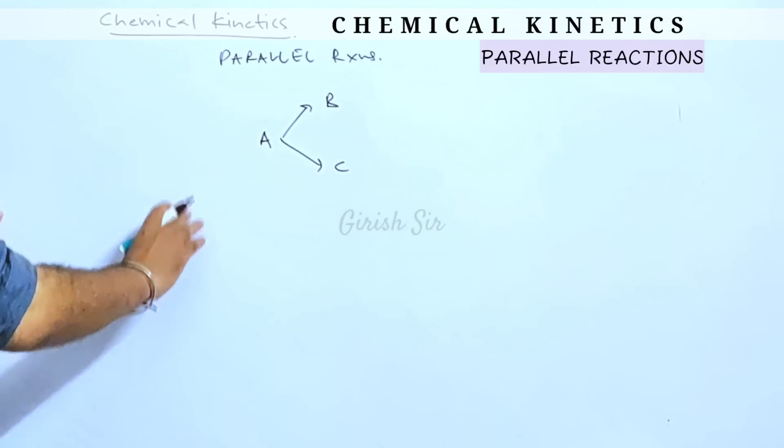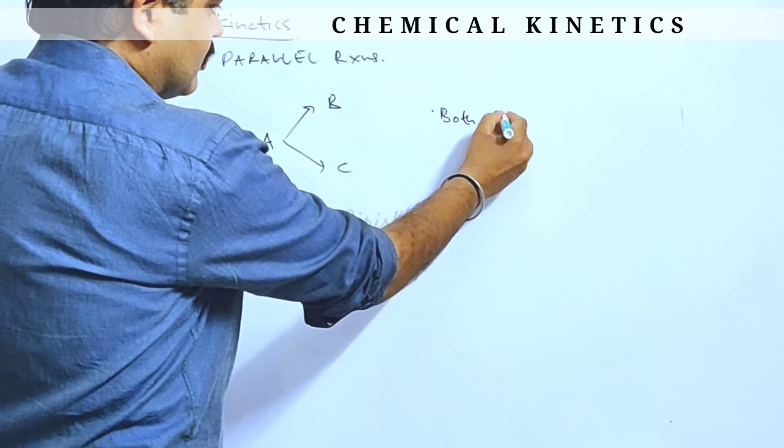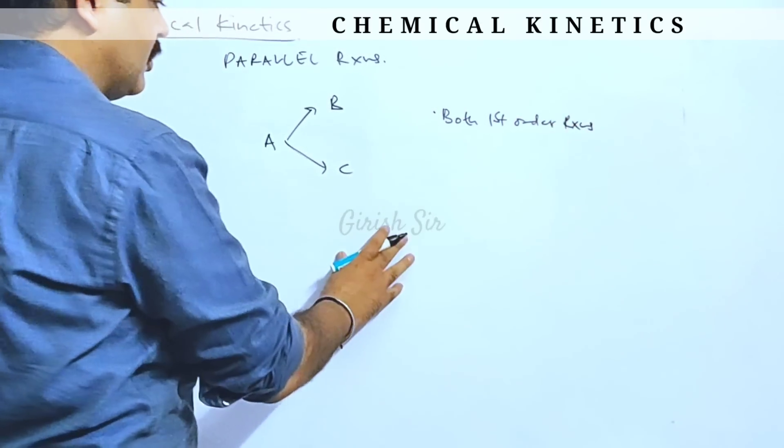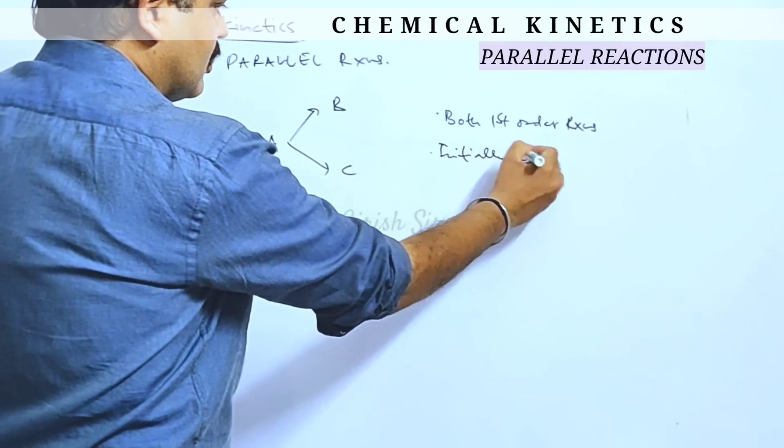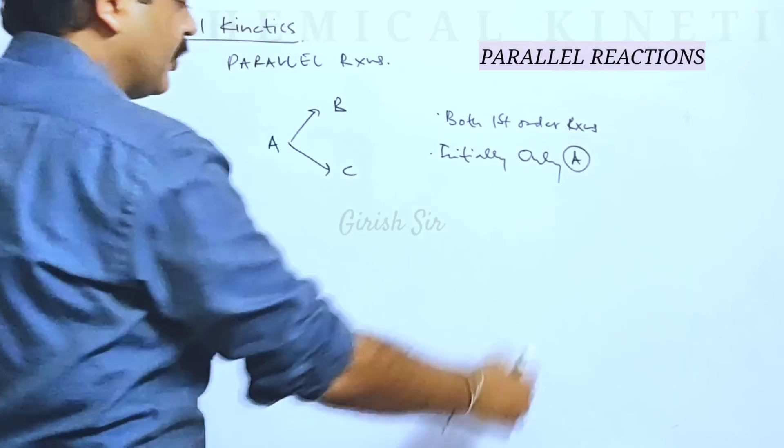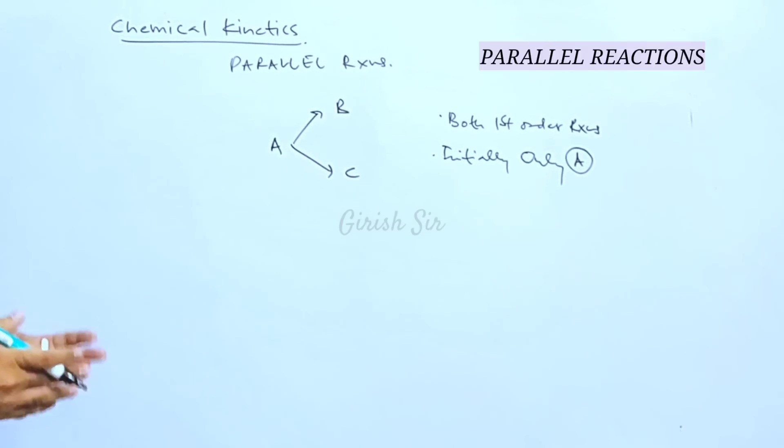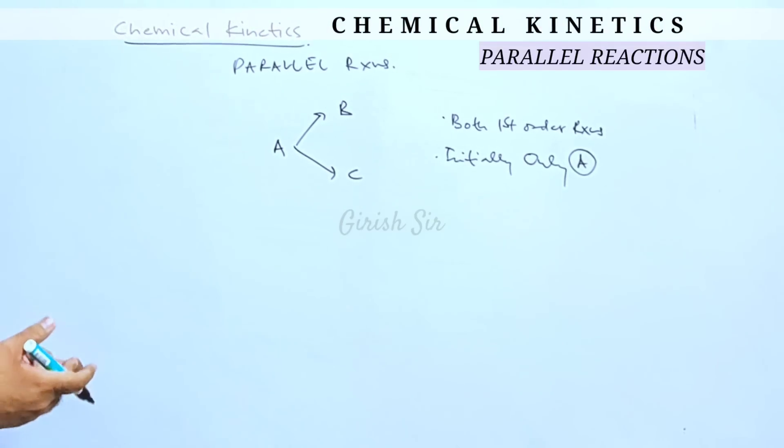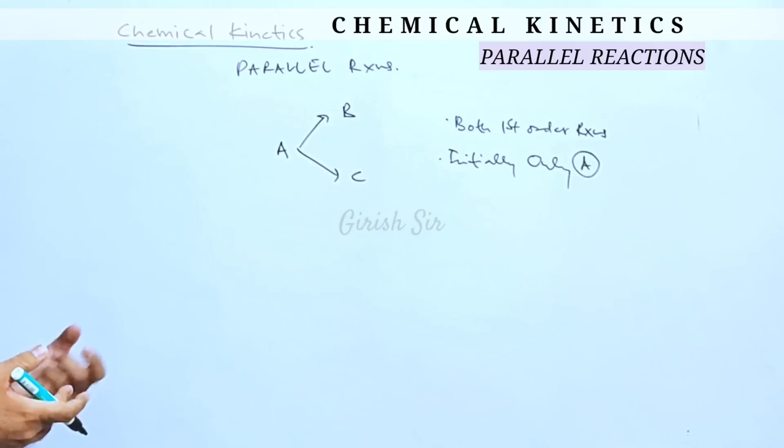Suppose both the reactions are first order. Initially only A is present in the container, only A is taken while amount of B and C initially suppose zero. Now how the reaction proceeds and the kinetics involved we try to understand.